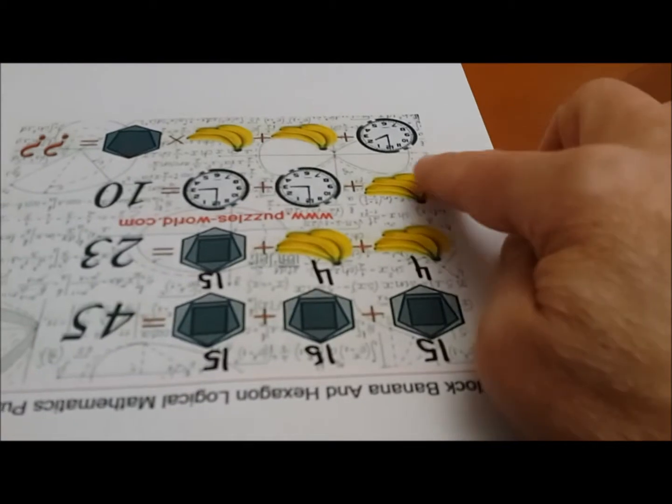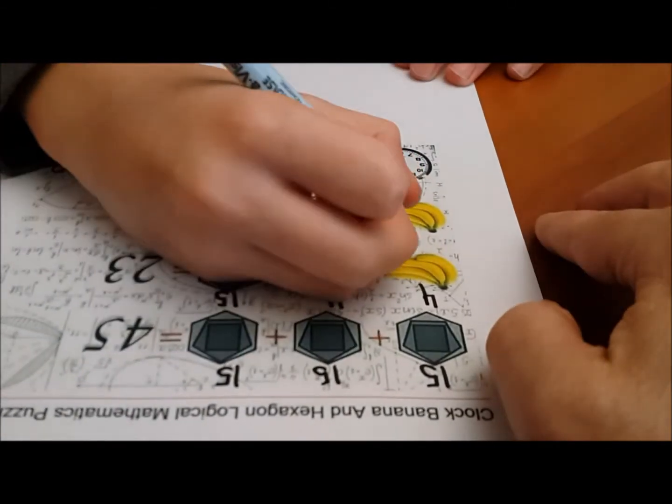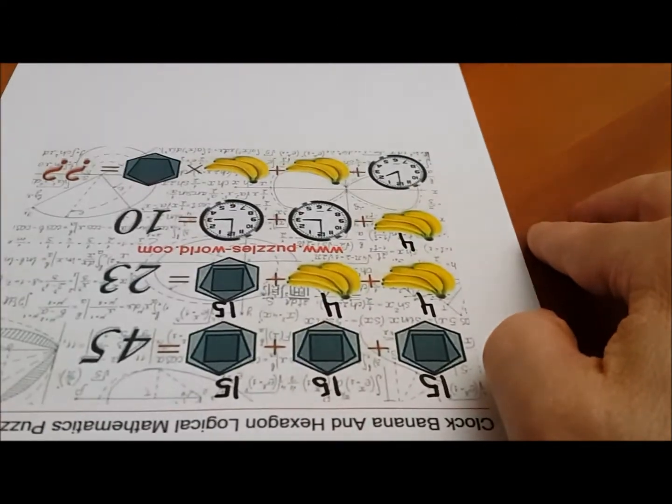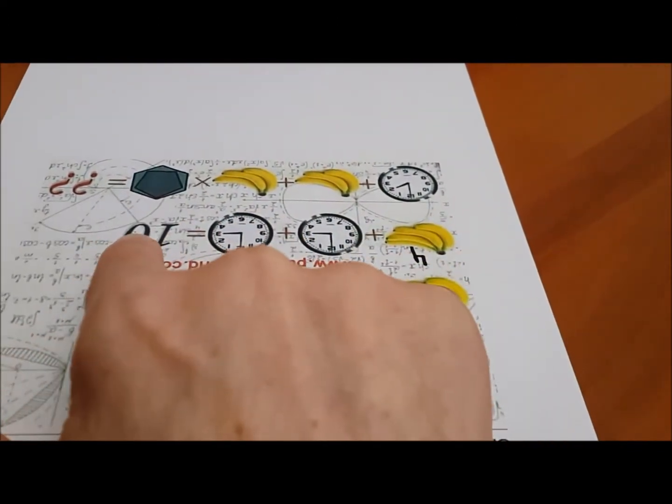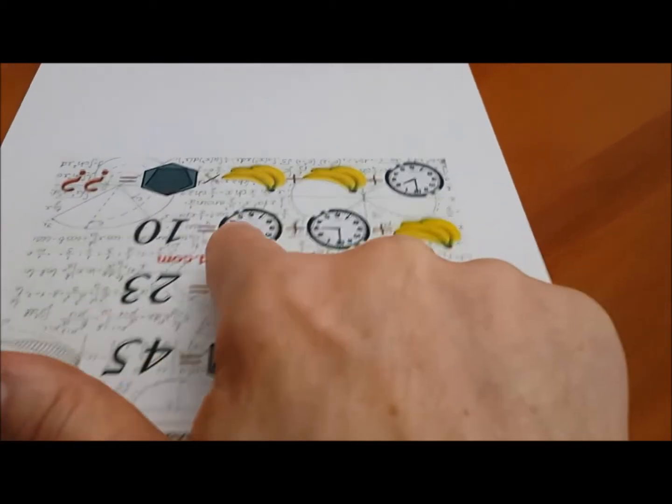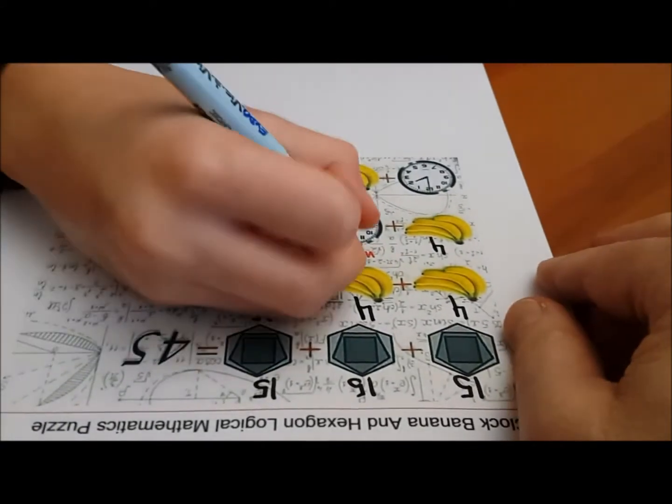Good. Now this set of bananas is the same as this one, so we have a 4 here. Now all of this has to equal 10. This is already a 4, so what's the sum of these two? 6. So each one is? 3. Okay, good.